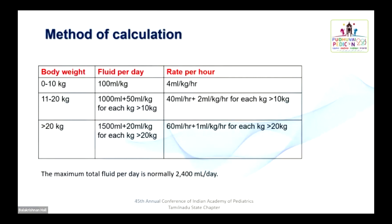To calculate maintenance fluids: for the first 10 kg, give 100 ml/kg/day (4 ml/kg/hour). For 11–20 kg: 1000 ml plus 50 ml/kg for each kg above 10 (40 ml/hour plus 2 ml/kg/hour above 10 kg). For weight above 20 kg: 1500 ml plus 20 ml/kg for each kg above 20 (60 ml/hour plus 1 ml/kg above 20 kg). The maximum fluid rate is 2400 ml/day or 100 ml/hour.